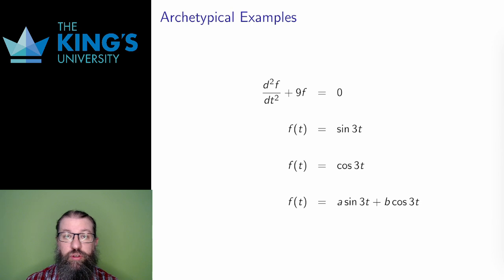Here's a second-order differential equation. It asks, what function has a second derivative which, when added to 9 times the original function, produces 0? The function sine of 3t has this property, as does the function cos of 3t.